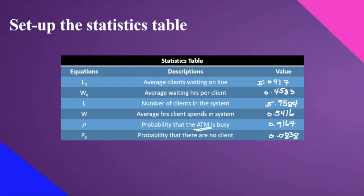The number of clients in the system — this already includes the server — is 5.9584. As you can see, L sub S and W sub S in POMCOM are always larger than L sub Q and W sub Q. W, or average hours a client spends in the system, is 0.54, while W sub Q is 0.45 because that is only in the queue. The system includes the queue plus the server. Similarly, L sub Q is 5.04 — only those in line — while in the system it is 5.95, which includes those in line plus those being served. That is the difference.